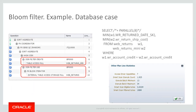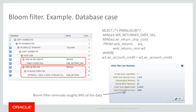We push that bloom filter to the Hadoop side and apply the join filter there. This allows us to eliminate 94 percent of the data — leaving 94 percent of the data on the cell side and bringing back to the database side only 6 percent of the data.